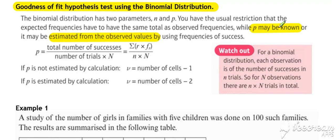Depending on which of these two it is will affect our degrees of freedom. So if P is not estimated by calculation, then our degrees of freedom is as it was in earlier examples, number of cells take away one.